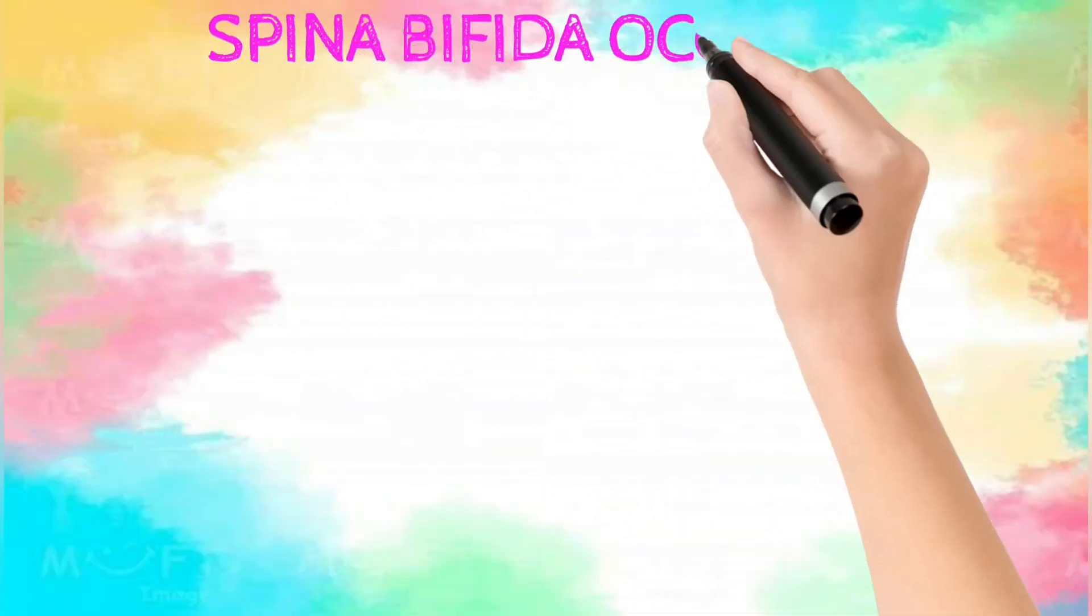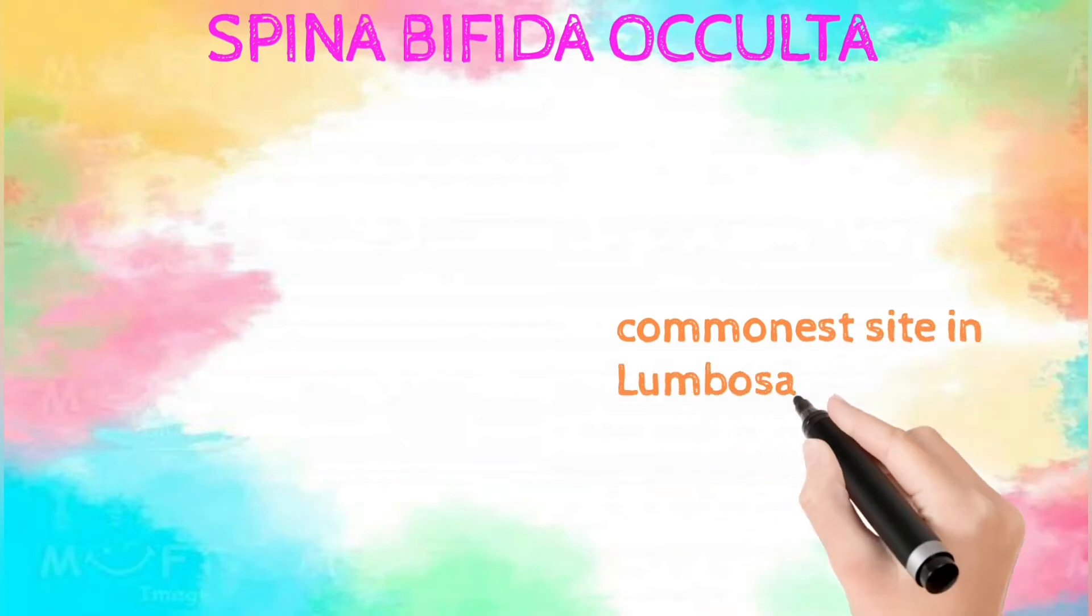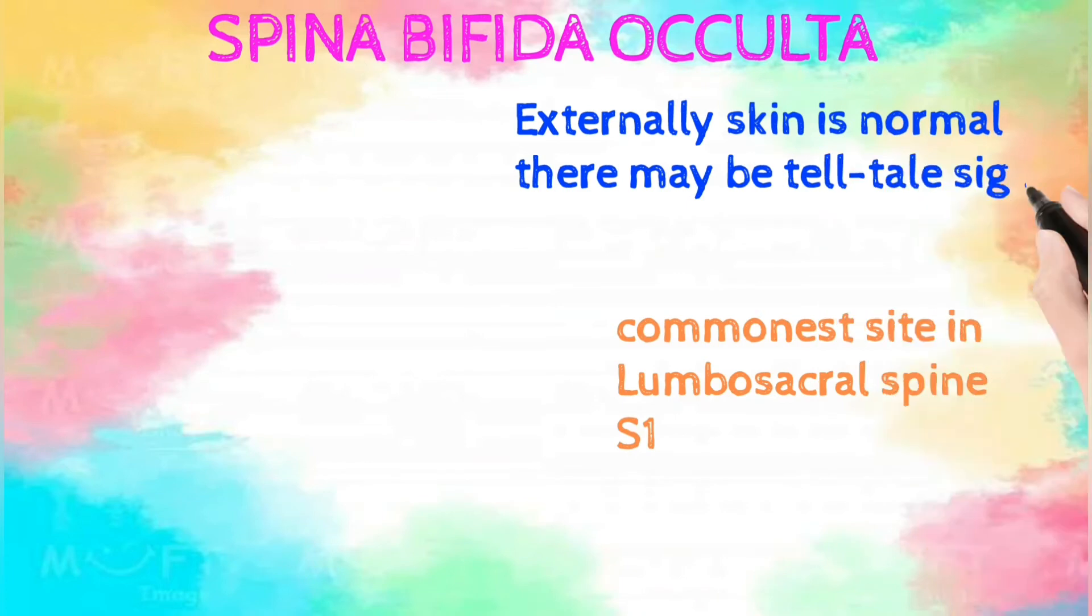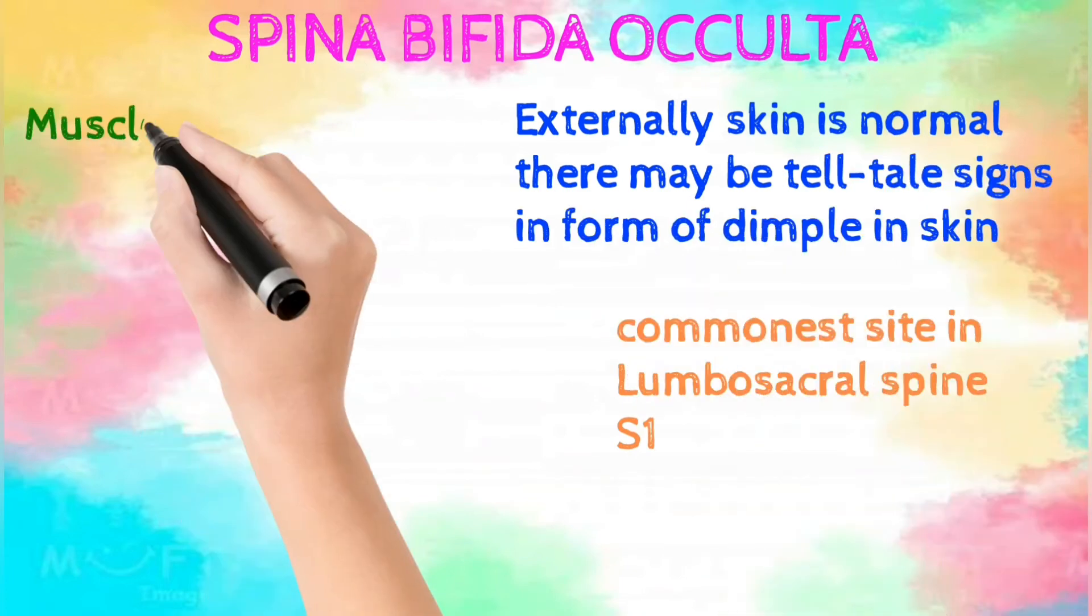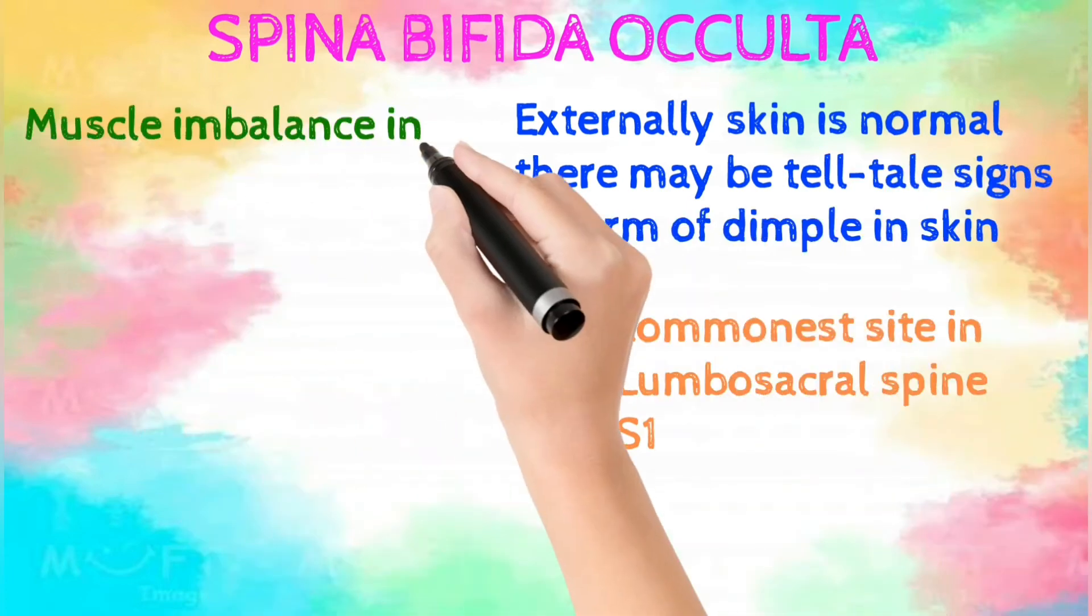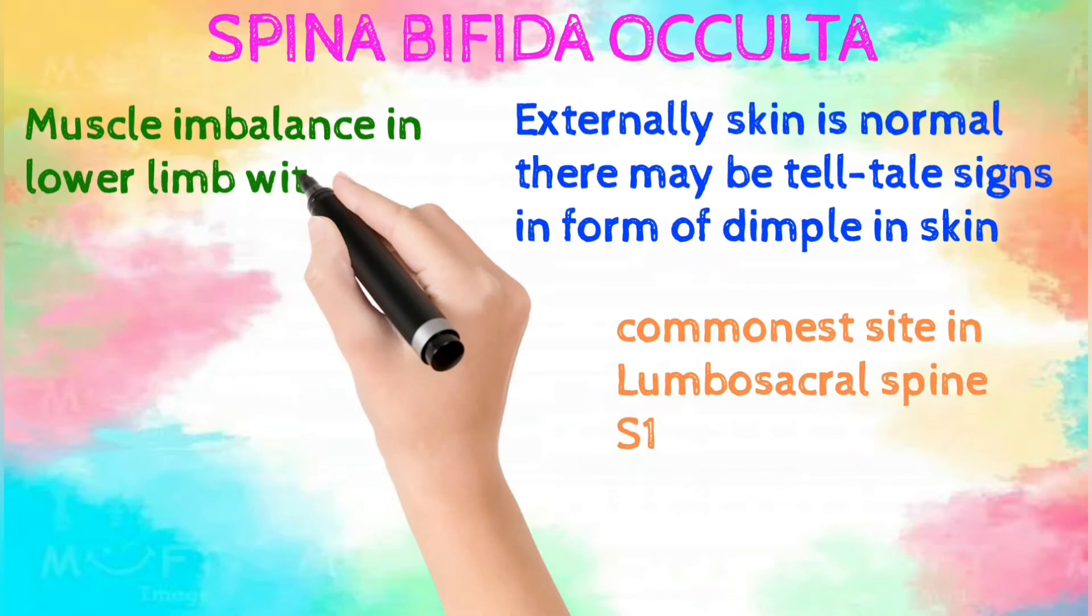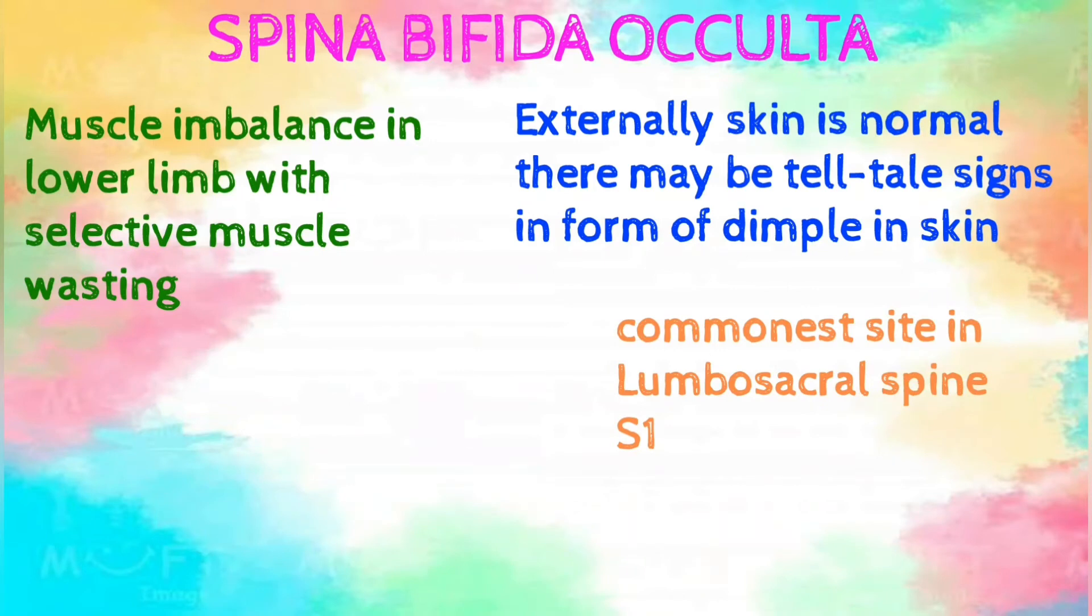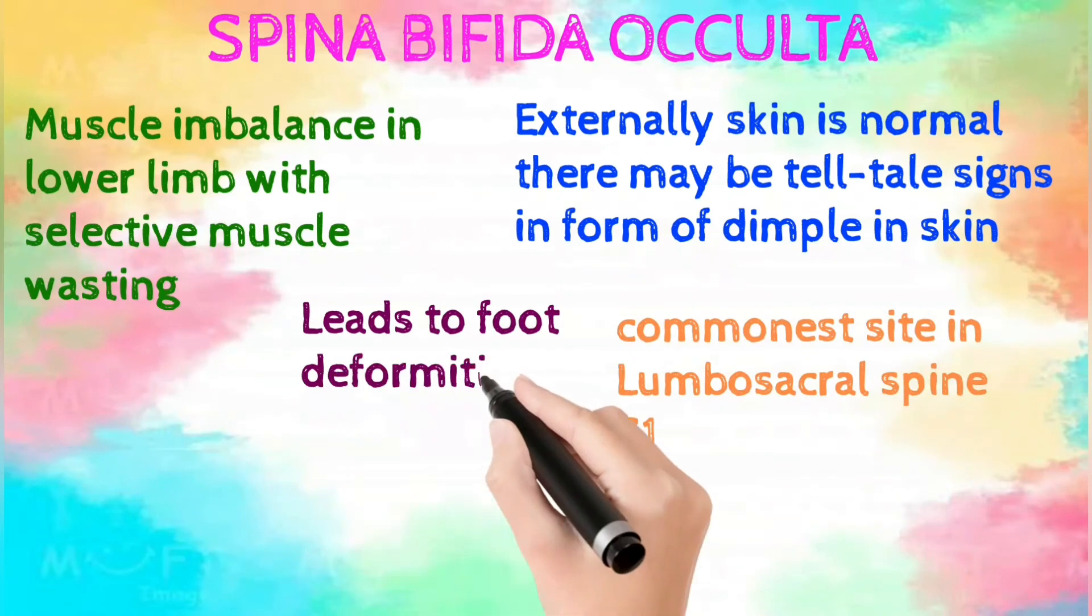So firstly, spina bifida occulta. It is the most commonest and mildest. The commonest site is lumbosacral spine S1, and mostly you can see the dimples in the skin and muscle imbalance in the lower limb with selective muscle wasting. Along with that, it leads to foot deformities.